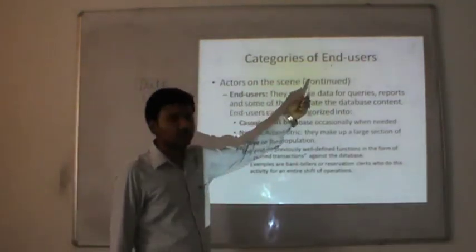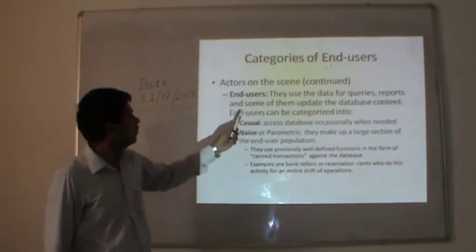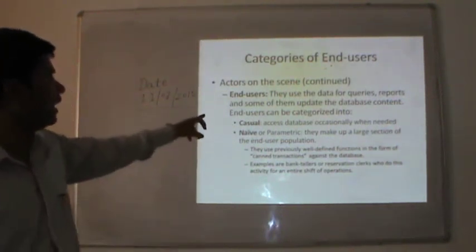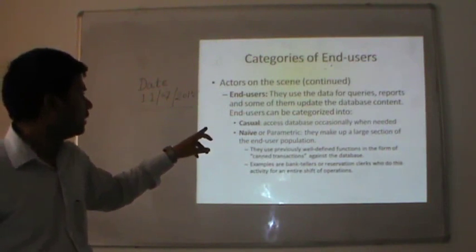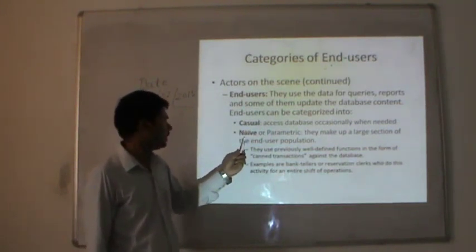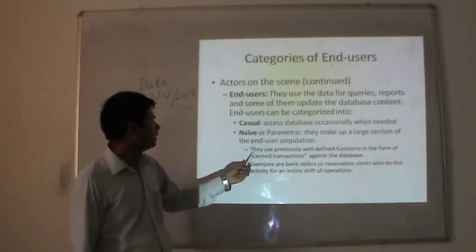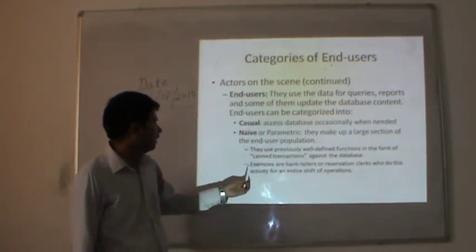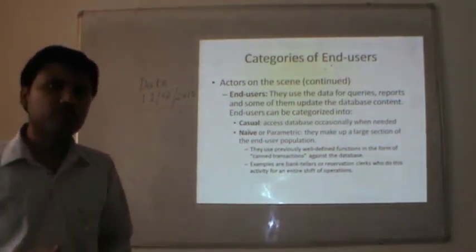Who are the actors on the scene? These are the end users, who can be categorized as casual and naive. End users use the data for queries, reports, and some of them update database contents. Casual users access the database occasionally when needed — these are occasional accessors. Naive or parametric users make up a large section of the end-user population; they use previously defined functions in the form of canned transactions against the database. For example, bank tellers or reservation clerks could do this activity for an entire shift of operations.